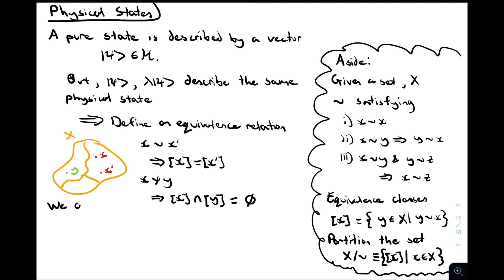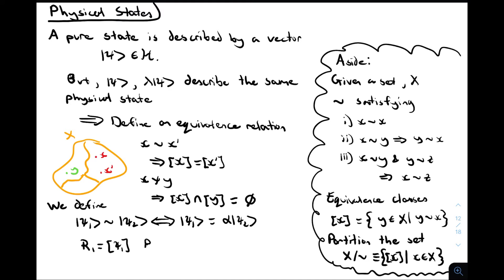We can define an equivalence relation on the Hilbert space by saying any two vectors are equivalent if they're related by multiplication by a complex number. The equivalence classes are then called rays. We can take the identification space H-tilde and identify it as the space of physical states describing our quantum system.